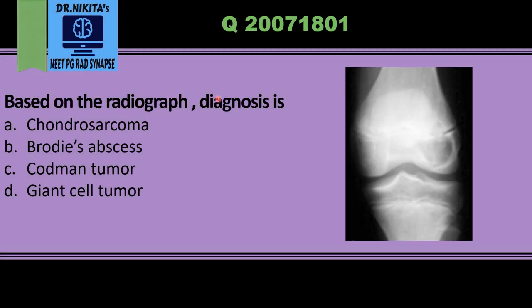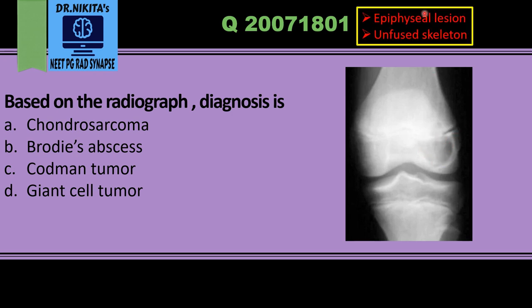Based on the radiograph, the diagnosis is as follows: in this radiographic image we see a lucent or lytic lesion — a well-defined lesion in the epiphysis. This is the epiphysis, and this is the physeal plate between the metaphysis and the epiphysis. This well-defined lytic lesion in the epiphysis in an unfused skeleton — epiphysis lesion in an unfused skeleton where the physeal plate has not closed — is chondroblastoma.